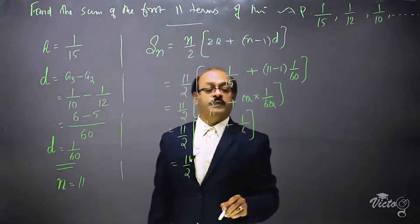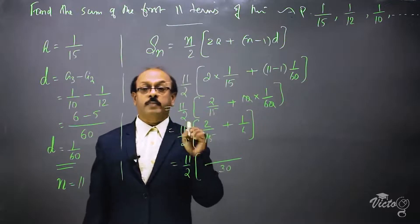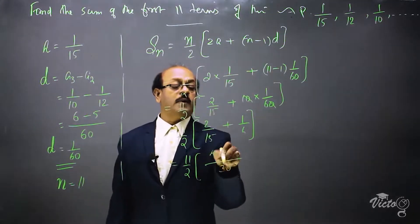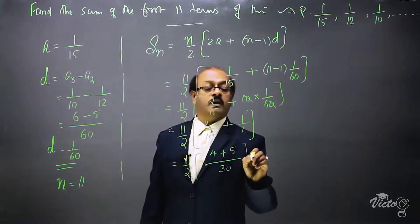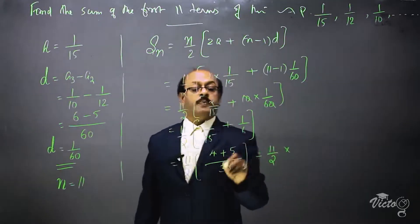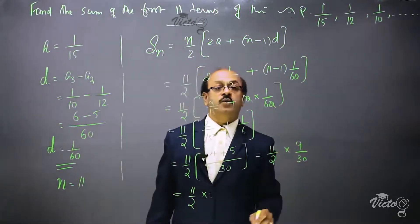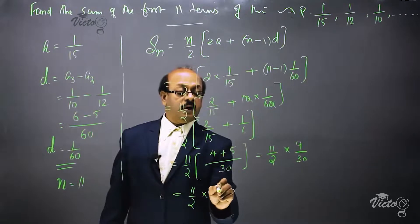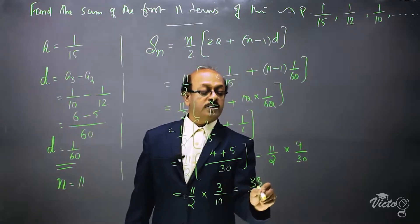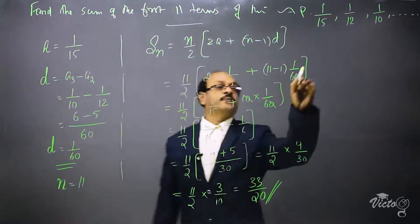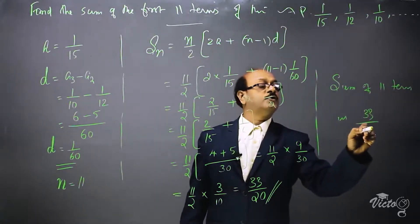Now 11/2 into [LCM of 15 and 6 is 30]. 15 into 2 is 30, so multiply the numerator by 2: 2 into 2 is 4. And 6 into 5 is 30, so multiply the numerator by 5: 5 into 1 is 5. That gives 11/2 into 9/30. Dividing numerator and denominator by 3 gives 3/10. So the answer is 11 into 3 over 2 into 10, which is 33/20. The sum of the first 11 terms of the given AP is 33/20.